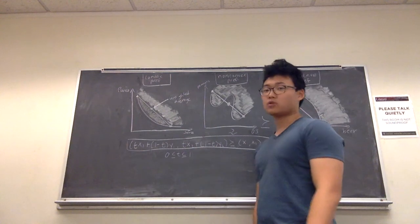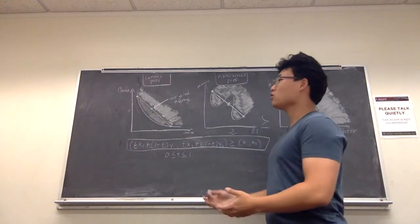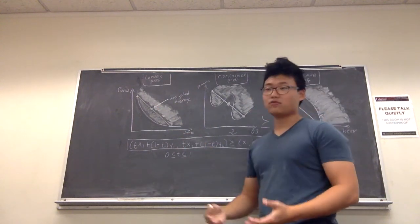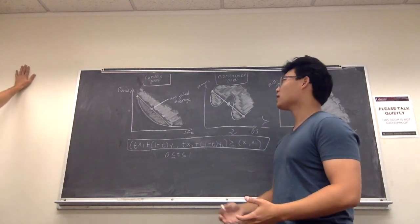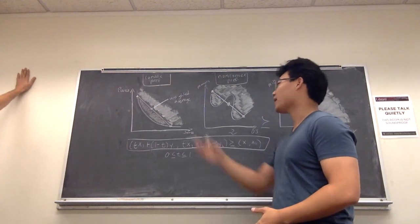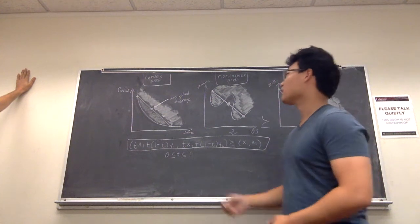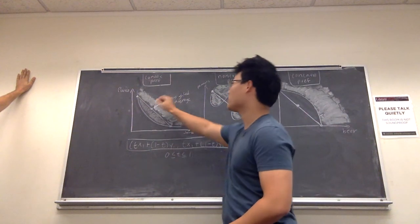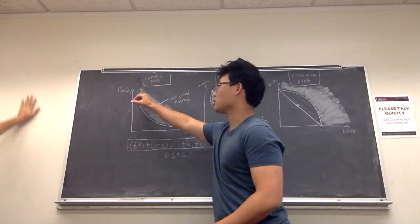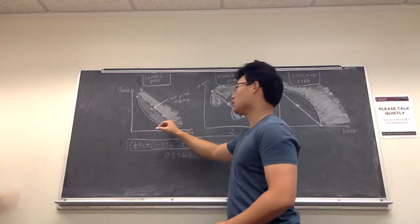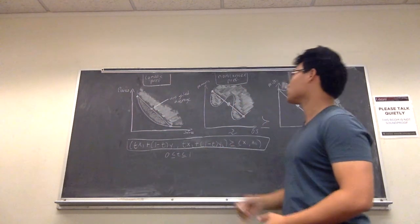An example of convex preferences are pants and shorts. Here it is safe to assume that most consumers would prefer to have a combination of pants and shorts rather than an extreme of the two. That is why the consumer would prefer to have the weighted average of the two more extremes rather than being on the edges of the indifference curve.